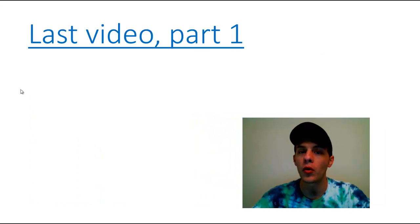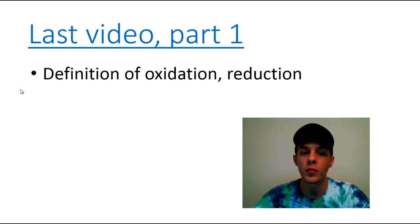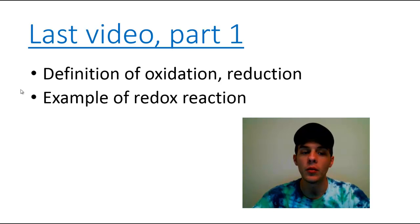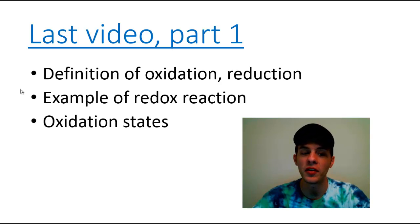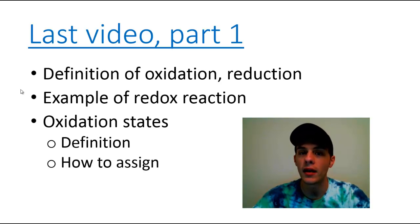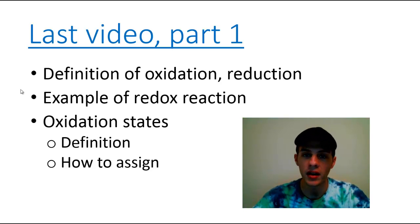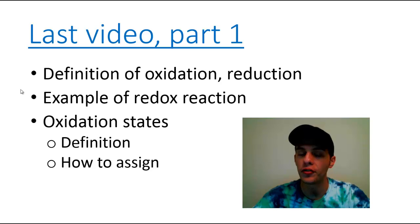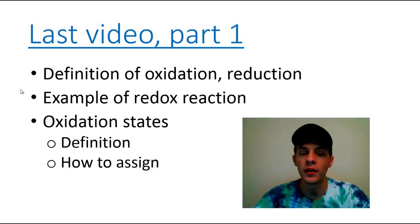In part one of the oxidation reduction reaction series, we talked about the definitions of oxidation and reduction, gave an example of a redox reaction, and then for the rest of the video we talked about oxidation states — what they are, the definition of an oxidation state, and the rules for how to assign oxidation states to elements as they exist in pure elements, monoatomic ions, polyatomic ions, molecules, or formula units. If you have little to no knowledge of redox or oxidation states, I highly recommend that you click that blue underlined link up there, which will take you to part one of this two-part video series.